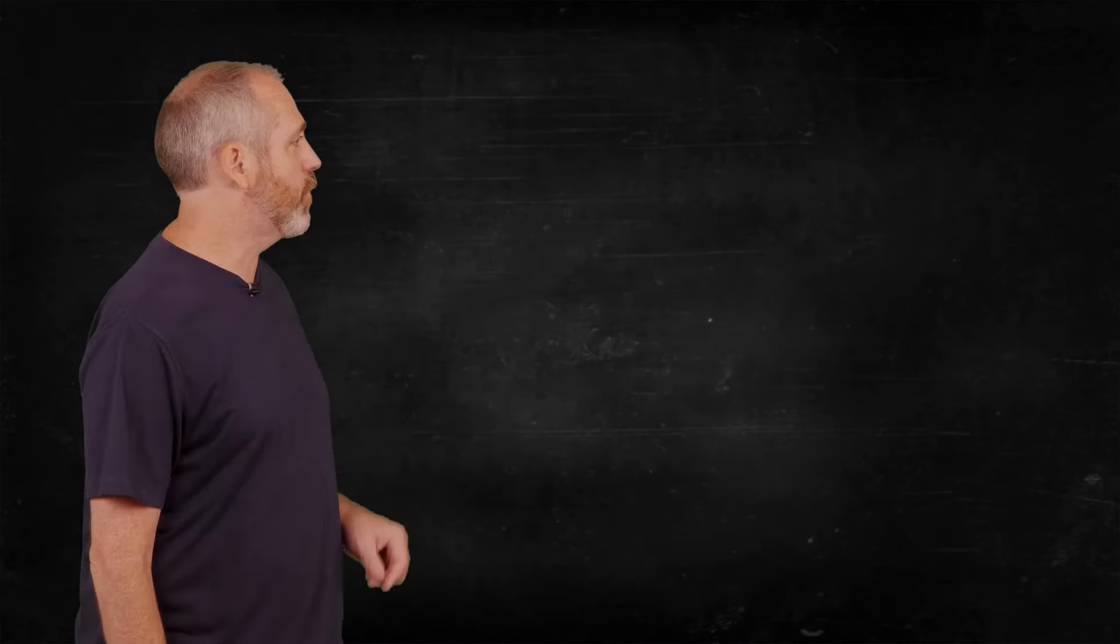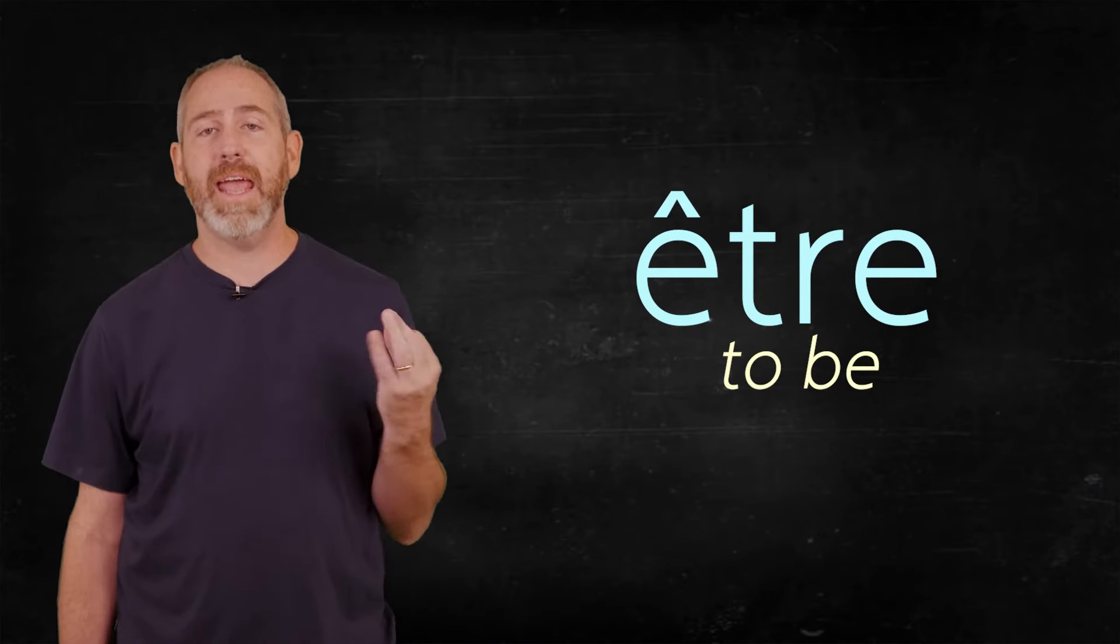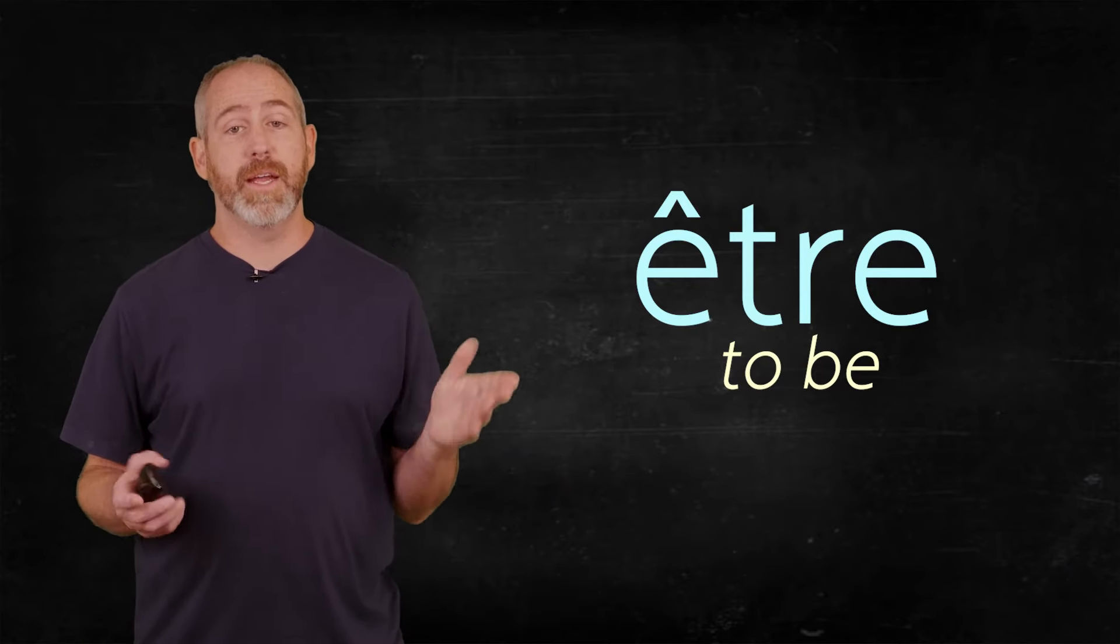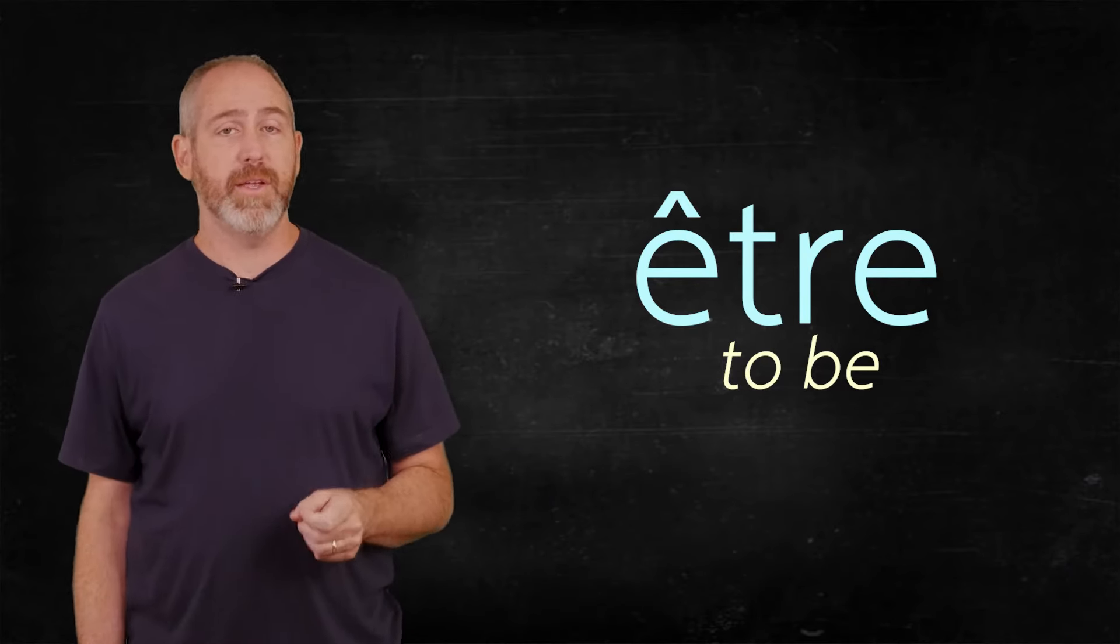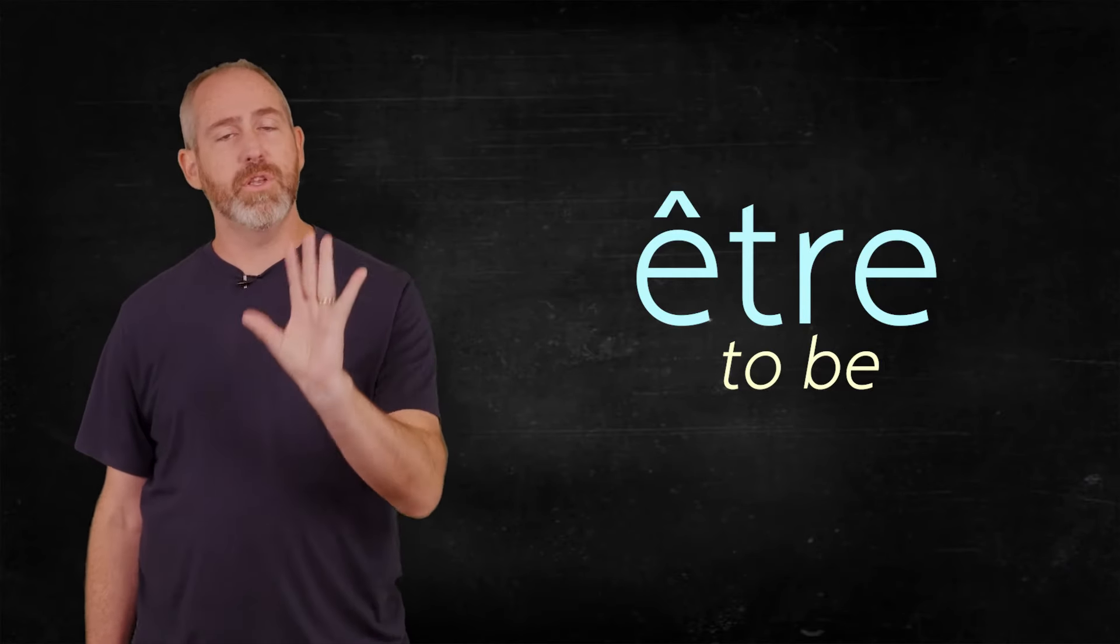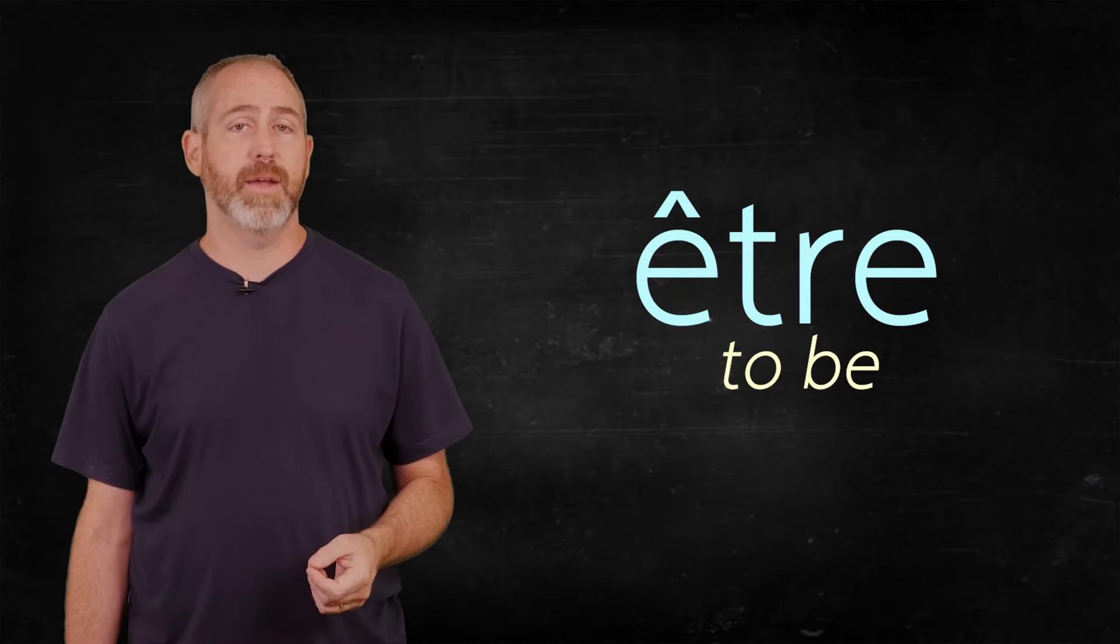First thing I want to do is tell you what the verb to be is. It's this word, être. Remember that R is back here, être. Now, notice there is a housetop accent on that E. So it's something you kind of want to put in your mind and just let it imprint, so you'll know anytime you write it to put that accent there. Accents are important in other languages.